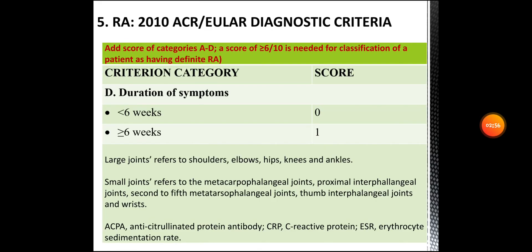That's all about the diagnostic criteria for rheumatoid arthritis. When you add the scores of categories A to D, if the total score is greater than or equal to 6 out of 10, it is needed for classification of a patient as having definite rheumatoid arthritis. So if your patient gets 6 or more points, that's the diagnosis — definite rheumatoid arthritis.